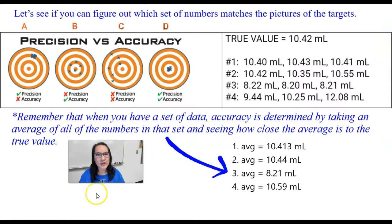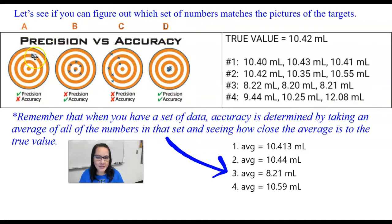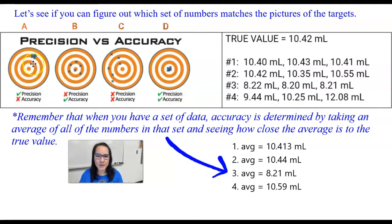Let's take a look at this figure, where we have four different targets labeled A, B, C, and D. Target A is precise — see how all the hits are nearly in the same spot? That makes them precise. But the bullseye is the true value, and that would be considered accurate. So this one is precise, but not accurate.